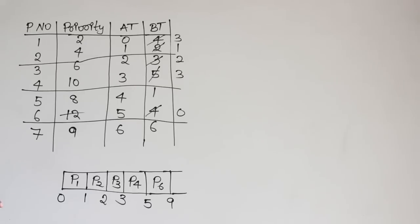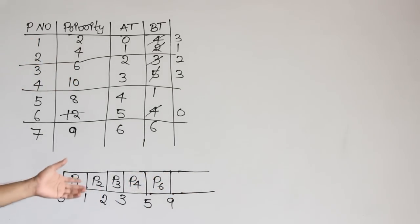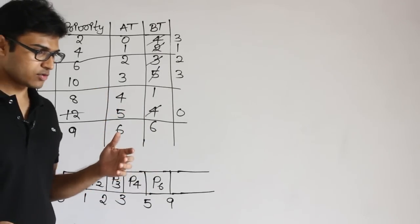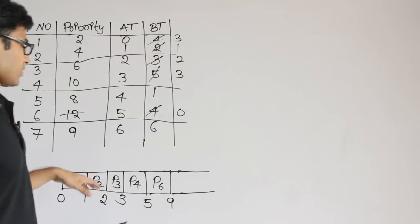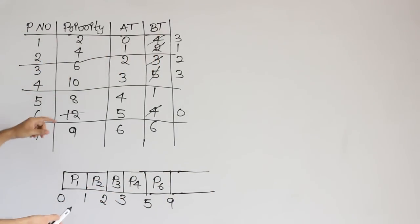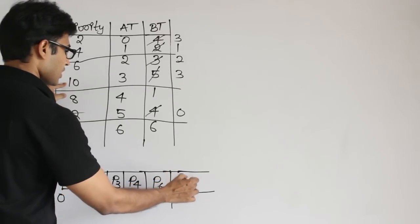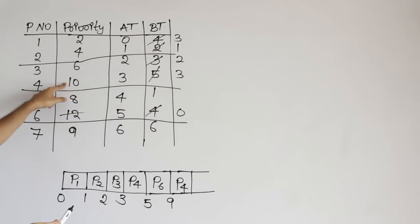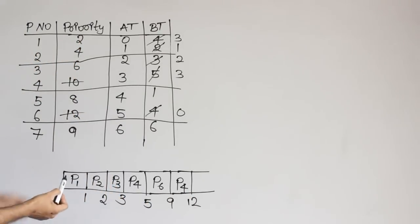At time 9, all processes are available. Now you can choose the one with highest priority, and from here on it will be the non-preemptive version. The reason is once all processes have arrived, we just look at priority and take whichever has highest priority directly. Among all remaining, priority 12 is over, so next highest is 10 — that is P4. Run P4 for its remaining 3 units, which takes us to time 12.